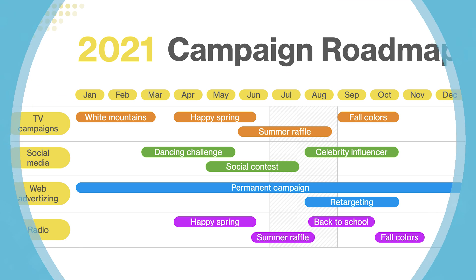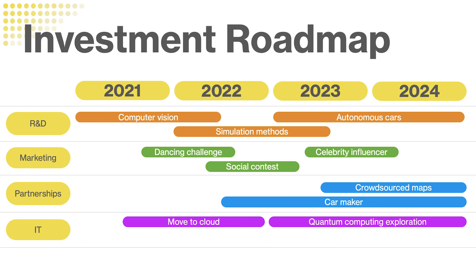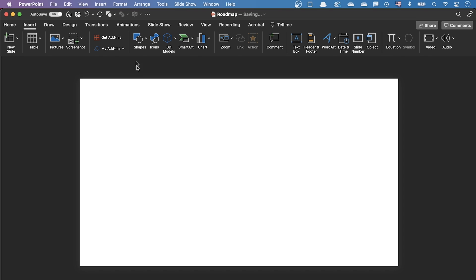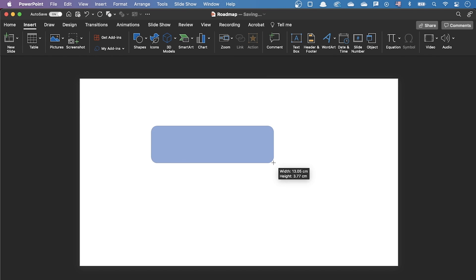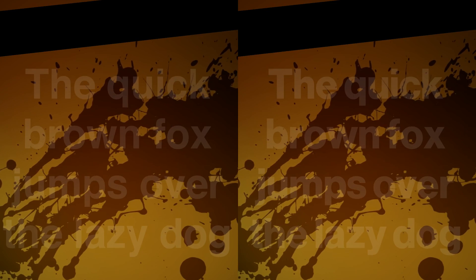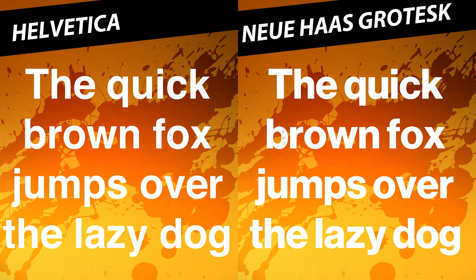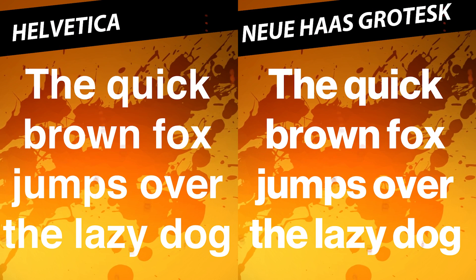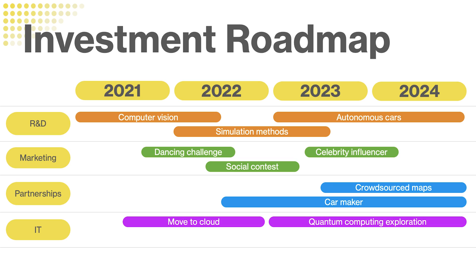Here's the second idea. The abundance of curves gives a feminine feel to this design. To create these shapes, just create a rounded rectangle and drag the yellow handle to the right. For the font, I'm using Neuha's Grotesque Text, a more elegant version of Helvetica which contributes to the roundness of the design.